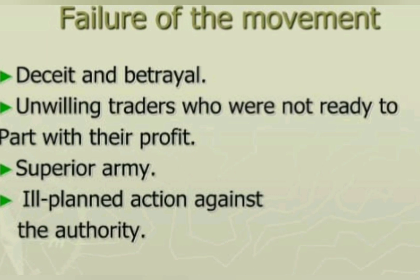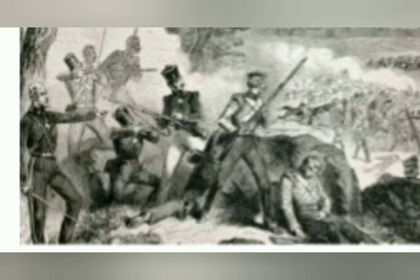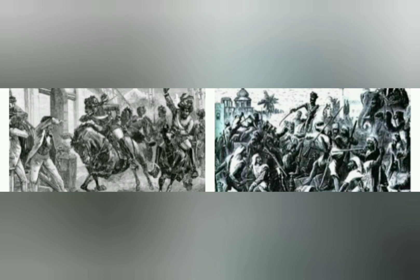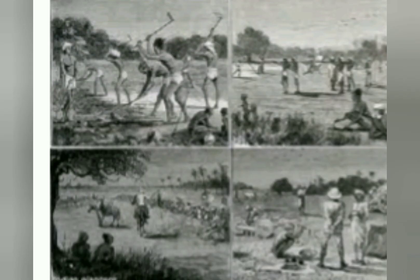After this revolt, many Indians were killed or put into prison by the British. One important outcome was that the rule of the East India Company came to an end in 1857, and the administration of India was taken over by the government of England. After this First War of Independence, the people understood the importance of freedom and were now very well aware that the purpose of the British was to keep them poor and enslaved forever.